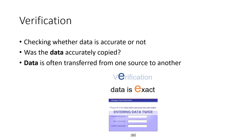You must understand and know the difference between verification and validation. Verification is when we check whether the data that's been inputted is accurate or not. Often data gets copied in to put it into a computer — so was it accurately copied? The person transferring it, often a data capturer, may type it incorrectly. That is what verification means: is the data exact?